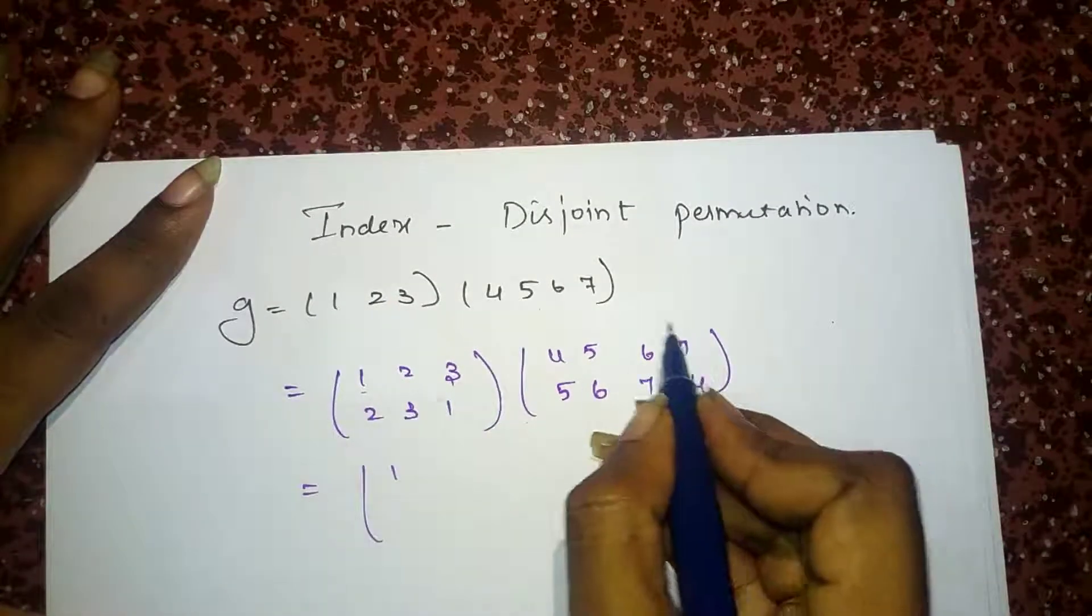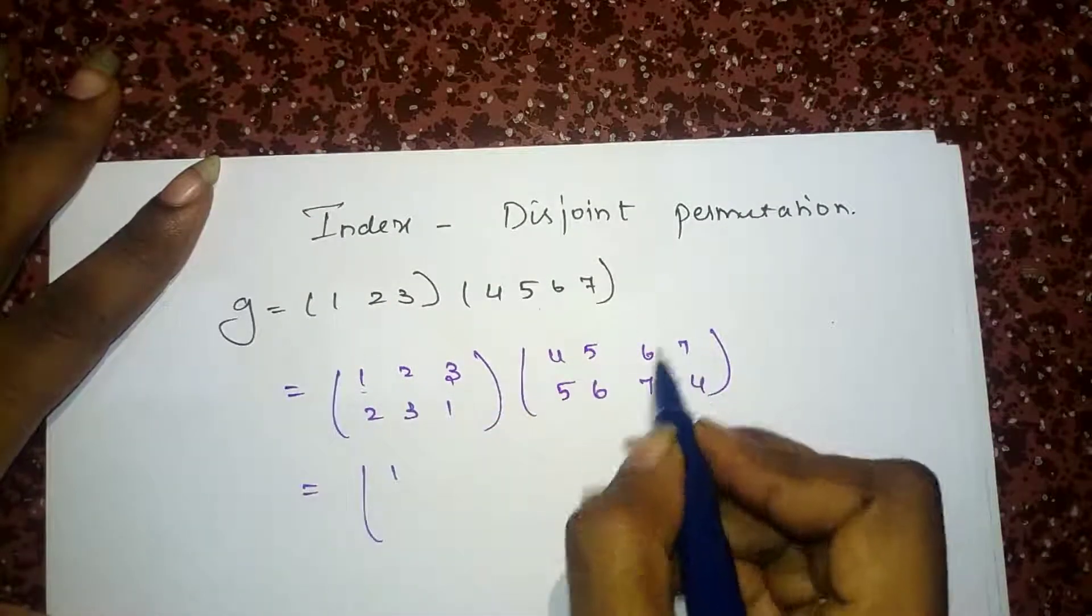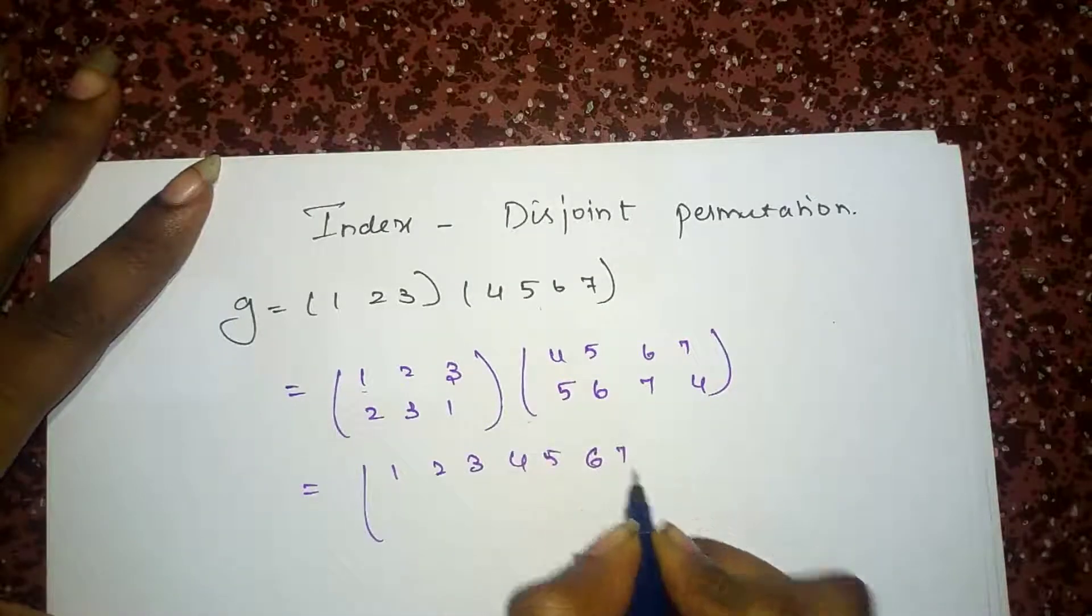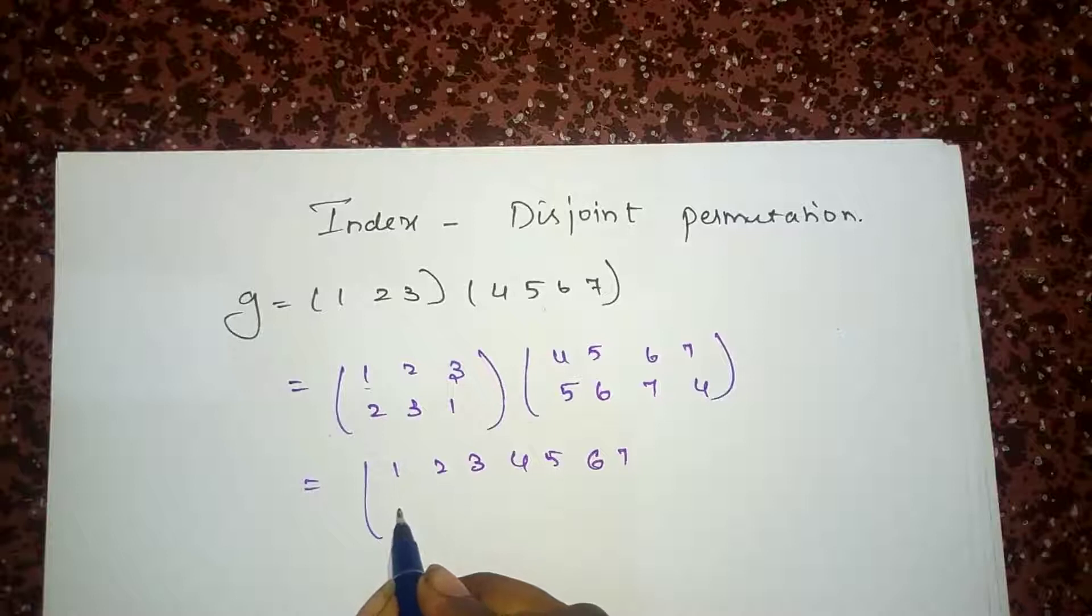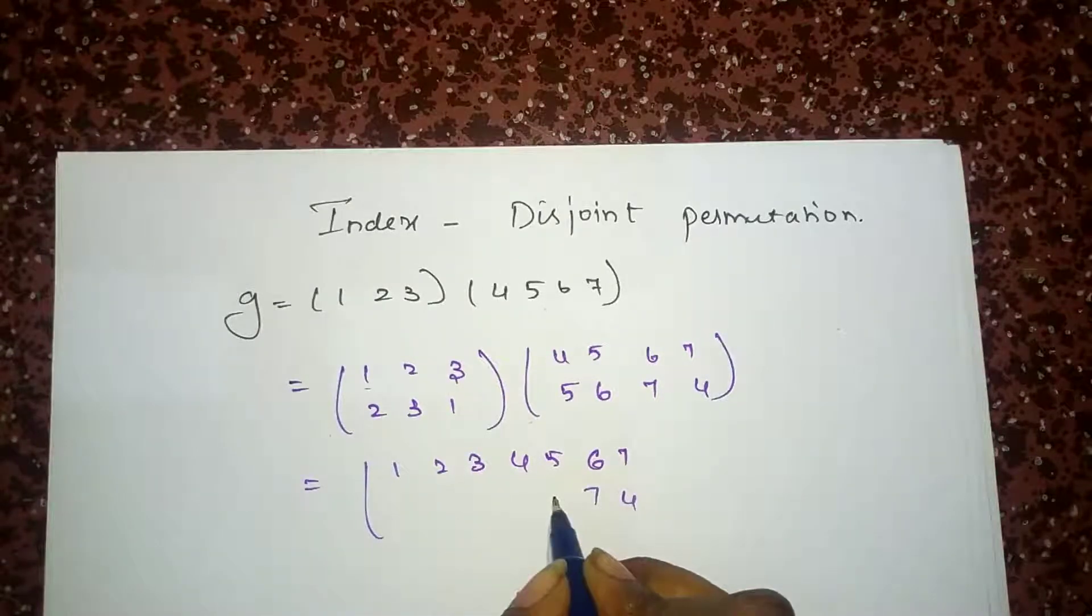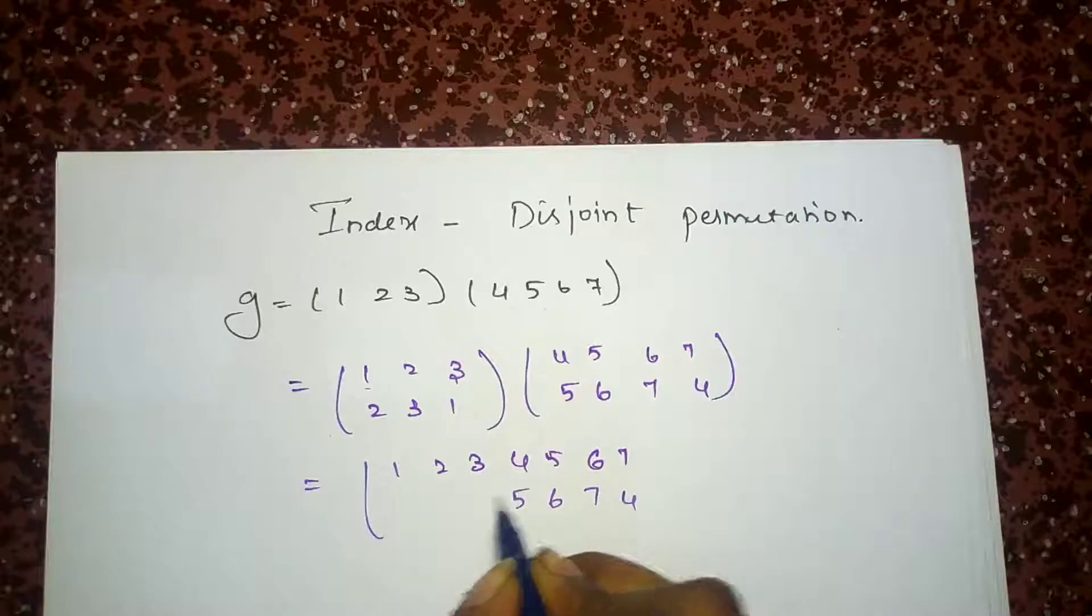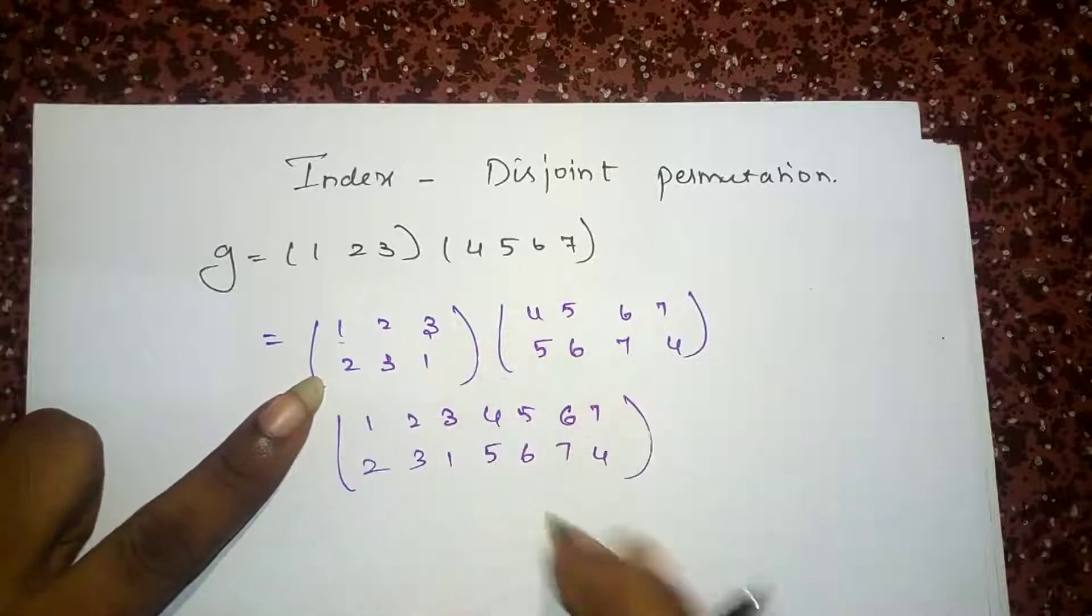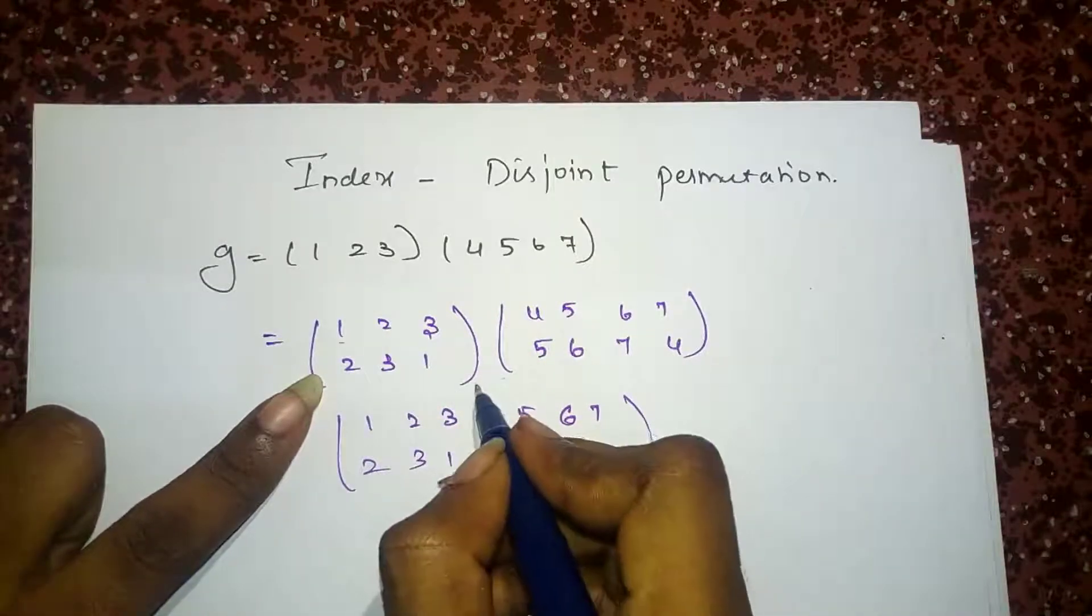Since the highest number in the first row is 7, I am going to write 1, 2, 3, 4, 5, 6, 7. Then 7 is mapped to 4, 6 to 7, 5 to 6, 4 to 5, 1 to 3, and 3 to 2. It is like joining these two permutations.